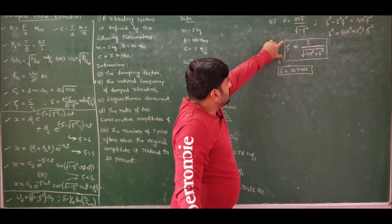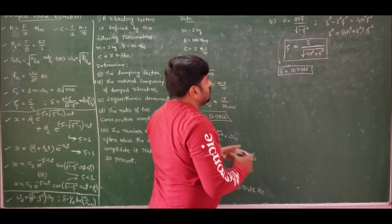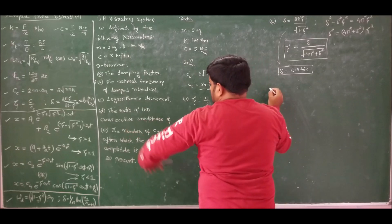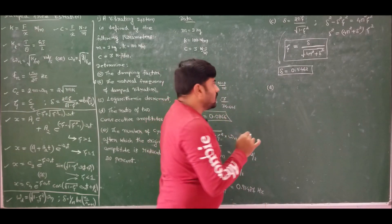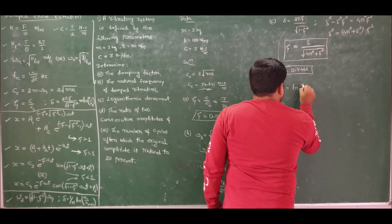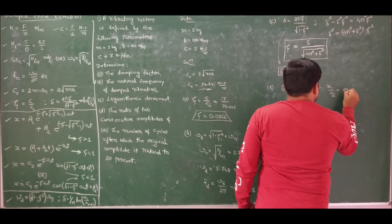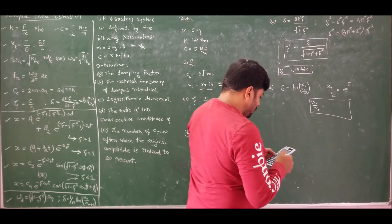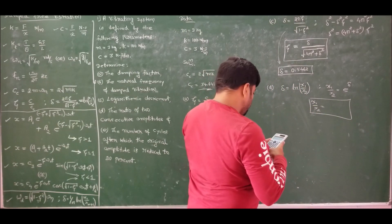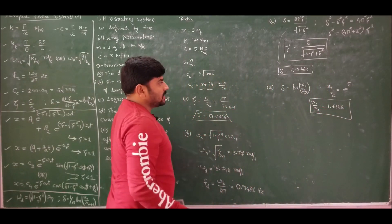That derivation was to also obtain the expression for zeta in terms of delta — a useful formula to note. For part D, the ratio of two consecutive amplitudes: from the definition of logarithmic decrement, delta = ln(x1/x2), so x1/x2 = e^delta = e^0.5462 = 1.7266.